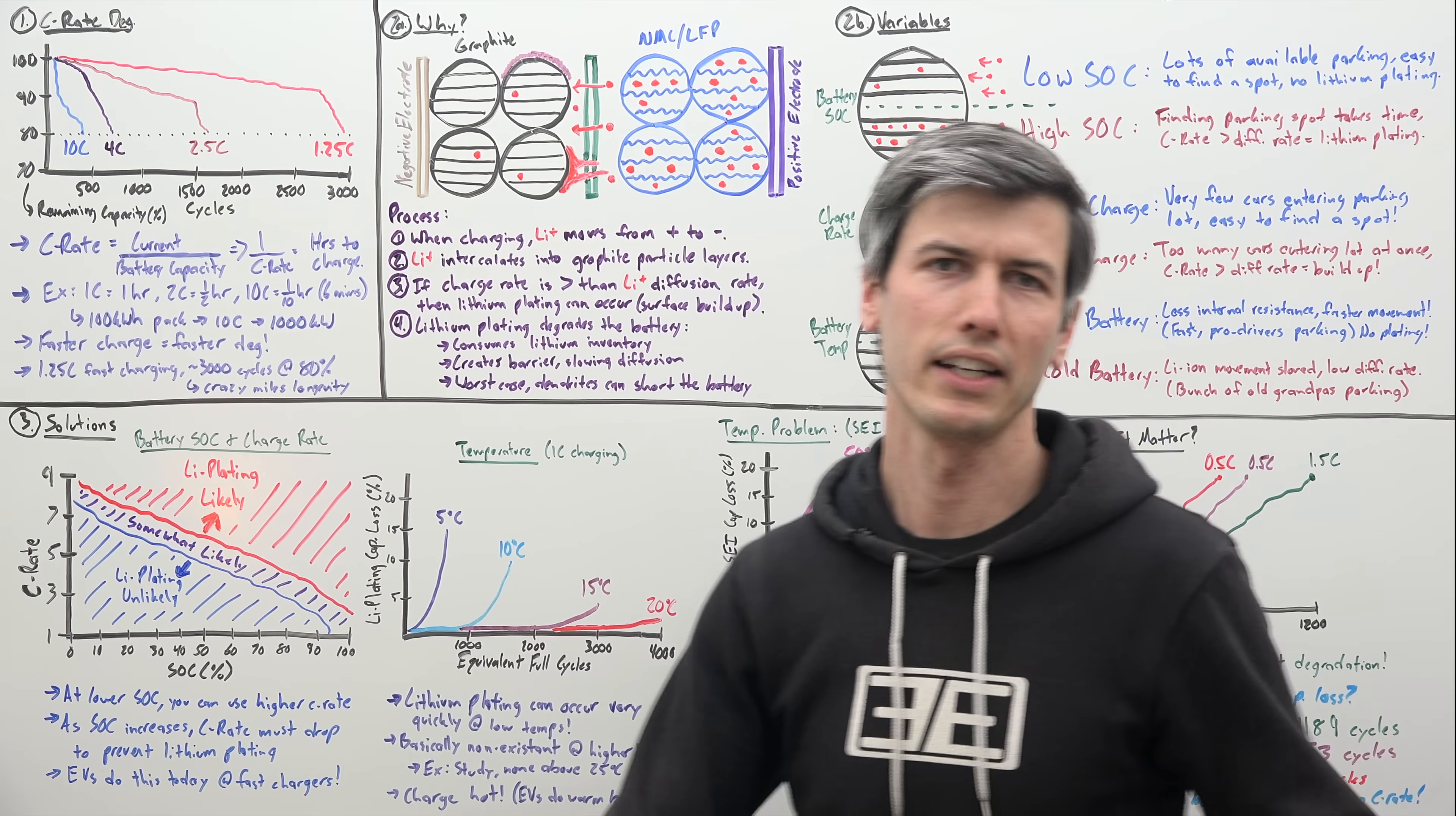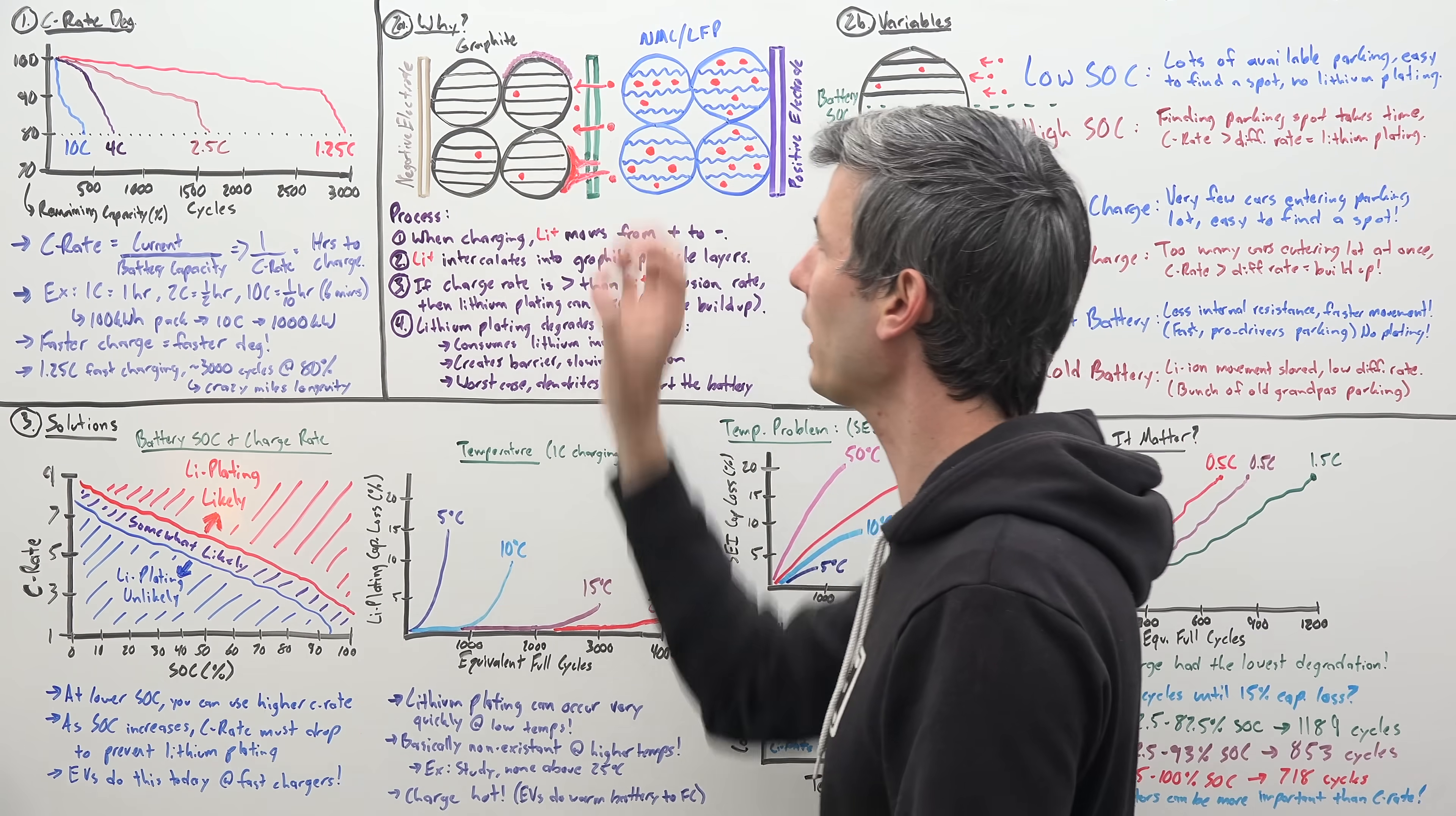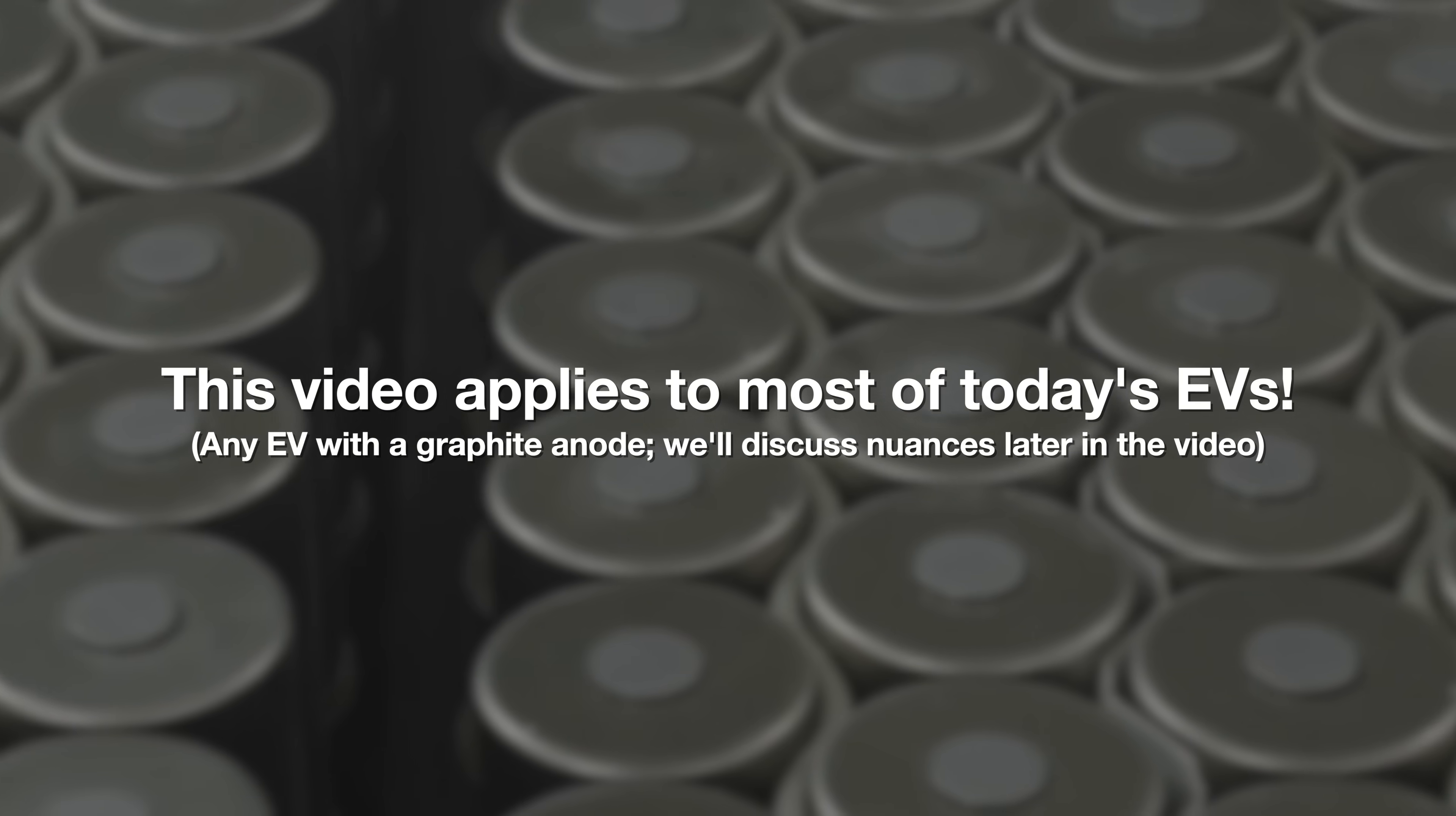Okay, but that still begs the question, why does a faster charging rate mean faster degradation? Now, if you haven't yet, it's certainly worth checking out my video on how lithium-ion batteries work. And if you're wondering, is this video going to apply only to specific chemistries? Well, we'll get into the specifics later. However, this video is really focusing on the negative electrode, which is primarily going to be made out of graphite, regardless of what the cathode is made of. Meaning even if it's an NMC or an LFP battery, this video will apply to both.